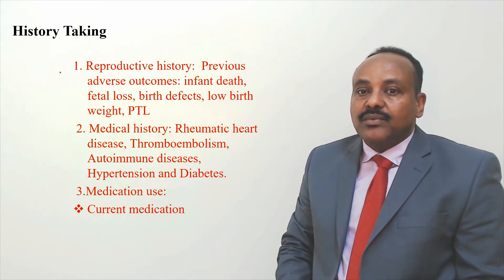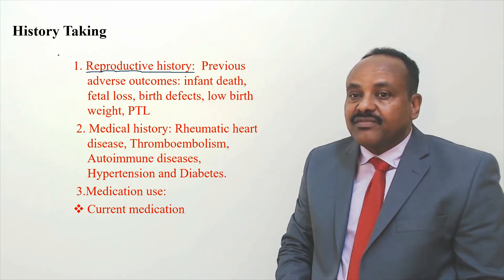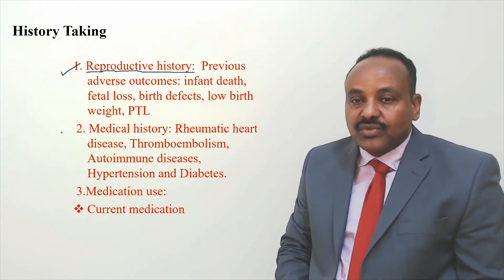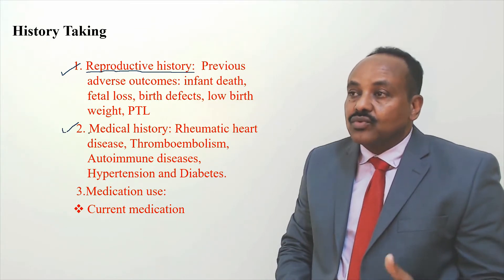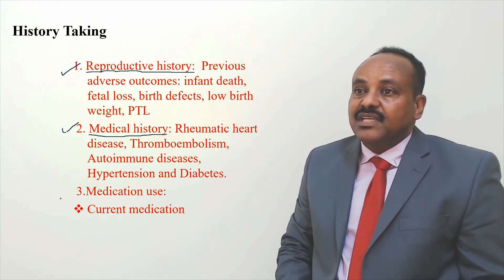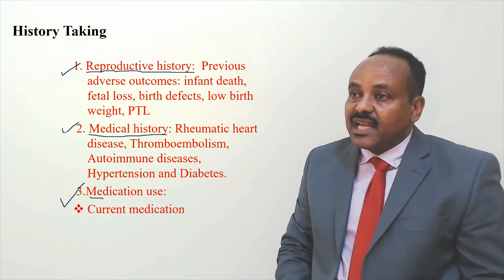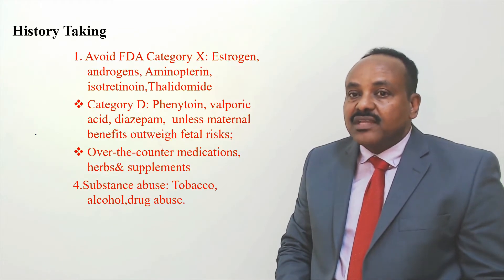In history taking, we should ask about reproductive history and any previous adverse outcomes: infant death, fetal loss, birth defects, low birth weight, preterm labor — all of these can recur in the current pregnancy. Another important point is medical history: rheumatic heart disease, thromboembolism, uterine disease, hypertension, and diabetes. We have to know whether she is diabetic or hypertensive and whether she needs any adjustment or optimization. We should also know about current medications, since some drugs are teratogenic and can affect the fetus.